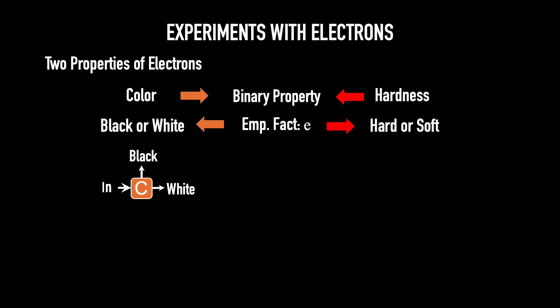The utility of this box is that the color can be inferred from the position. If you find the particle, the electron over here, it is a white electron. If you find the electron here, it is a black electron. Similarly, we can build a hardness box, which again has three apertures, an in-port and two out-ports. Hard electrons come out this port and soft electrons come out this port.